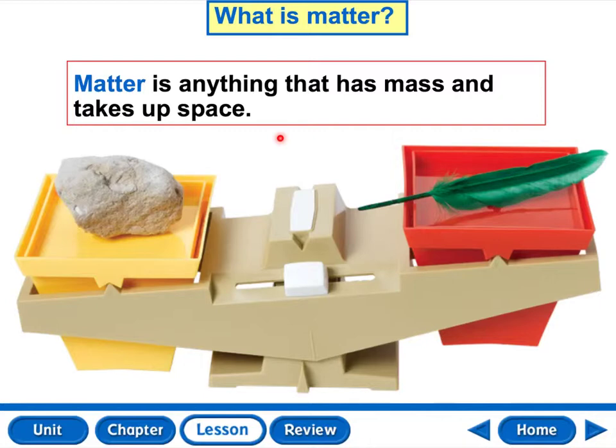Mass is different from weight. Don't get the two confused. Weight has to deal with gravity. We will talk about that in another lesson. So matter is what is in the object. Mass is how much is in the object.